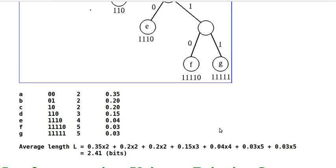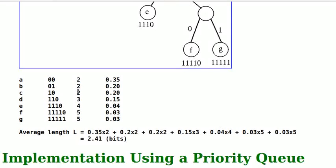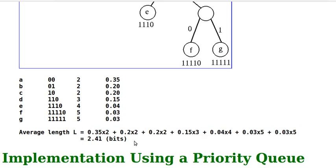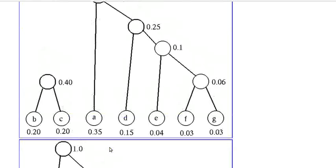So the codeword length for A is 2, B is 2, C is 2, D is 3, E is 4, F is 5, and G is 5. The average length is L equals 0.35 times 2 plus 0.2 times 2 plus 0.2 times 2 plus 0.15 times 3 plus 0.04 times 4 plus 0.03 times 5 plus 0.03 times 5, equals 2.41. This is shorter than the average length of code 3 above, which is 2.51. In fact, the average length of a Huffman code is optimal.